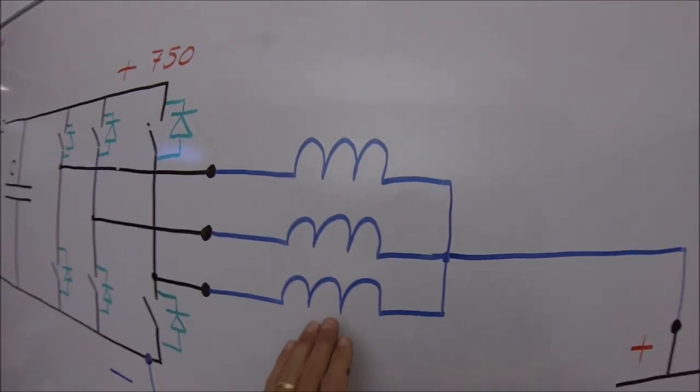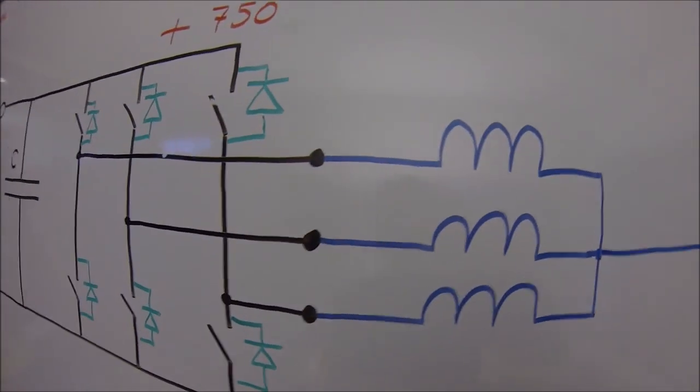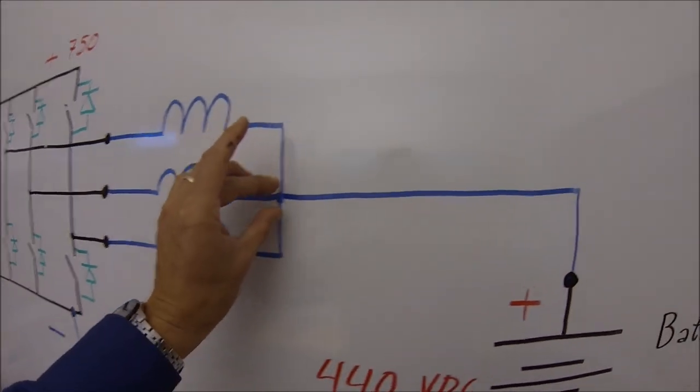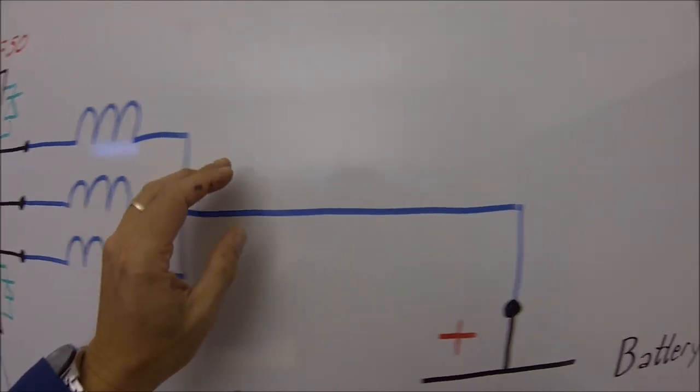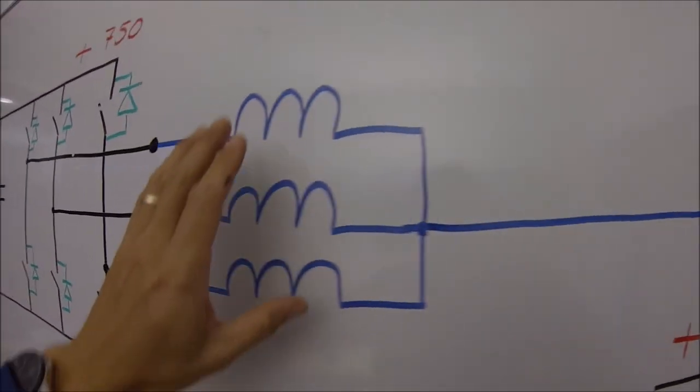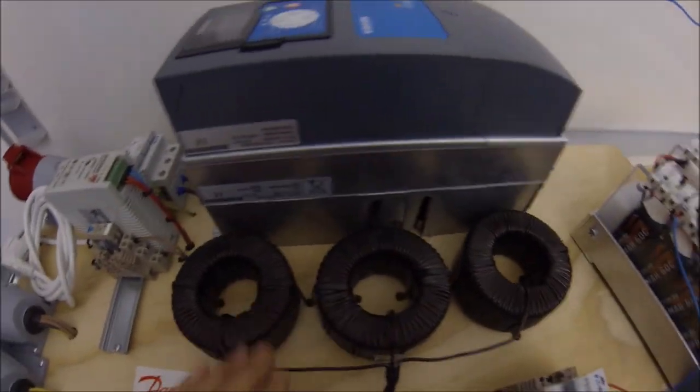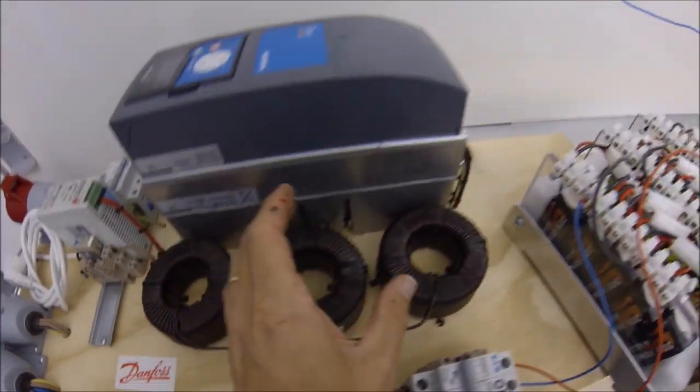We have to add these three chokes, one for each motor phase. They are connected together in one point and connected to the plus. It is important that these chokes don't have the same iron core. So this must be individual chokes.